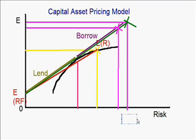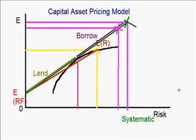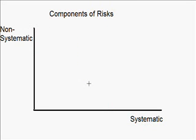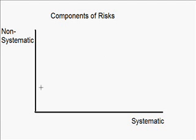Remember, this line represents the systematic risk. But the equity we are trying to evaluate contains both the systematic and non-systematic risk. What we can do is to decompose the total risk of the equity into non-systematic and systematic risk. Here, I put the vertical axis as non-systematic risk and the horizontal one as the systematic risk.